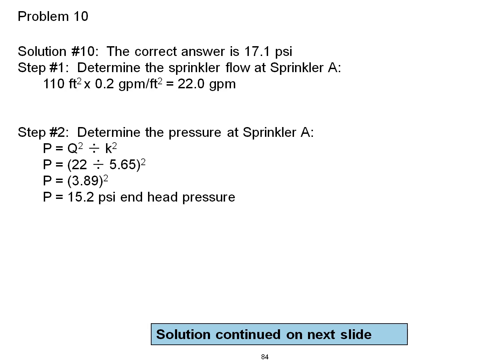Step 2, determine the pressure at sprinkler A. P is equal to Q squared divided by K squared. 22 divided by 5.65 squared equals 3.89 squared. Our pressure at the end head is 15.2 PSI.